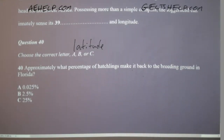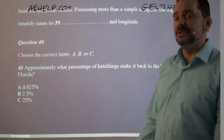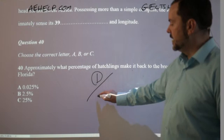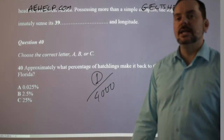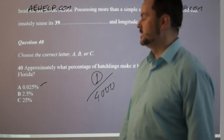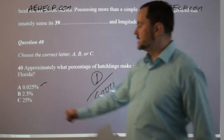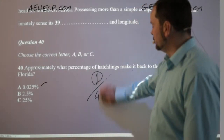Last question, number 40: approximately what percentage of hatchlings make it back to the breeding ground in Florida? You had to do a little math — only one in 4,000 hatchlings makes it back to Florida. One divided by 4,000 is 0.025%. The correct answer is A.